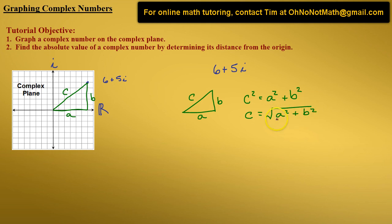So based on Pythagorean's theorem, we can derive the formula for the absolute value of a complex number, which is |a + bi| = √(a² + b²).